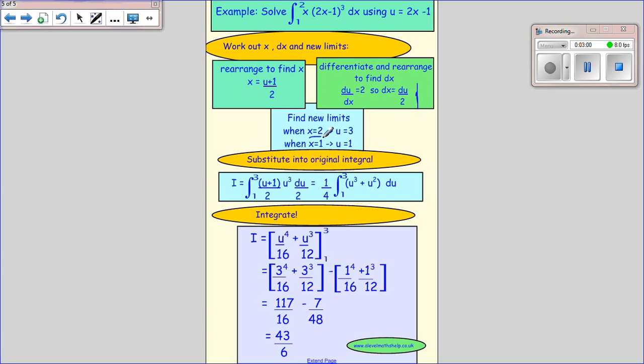We want to find the new limits. When x equals 2, the top limit, 2 times 2 is 4 take away 1 is 3, so the limit for u is 3. When x equals 1, the bottom limit, 2 times 1 is 2 take away 1 is 1, so our bottom limit is 1.